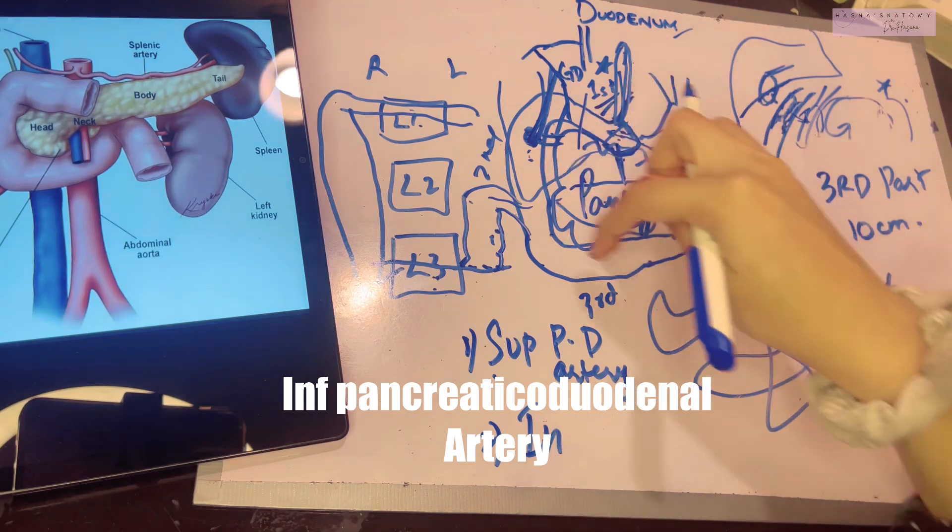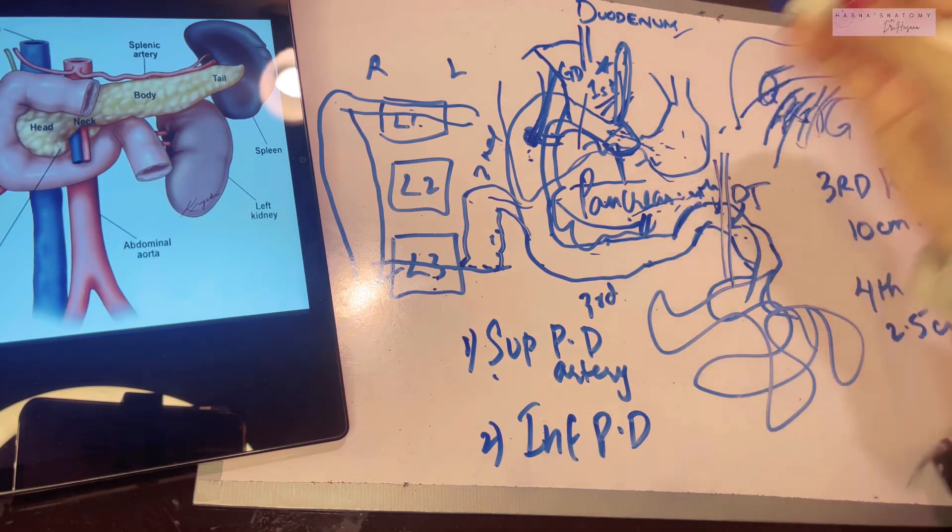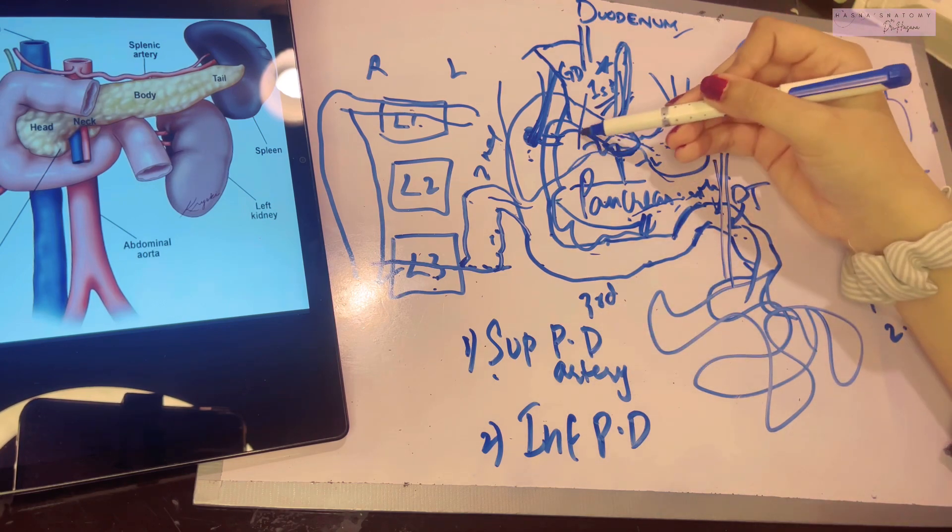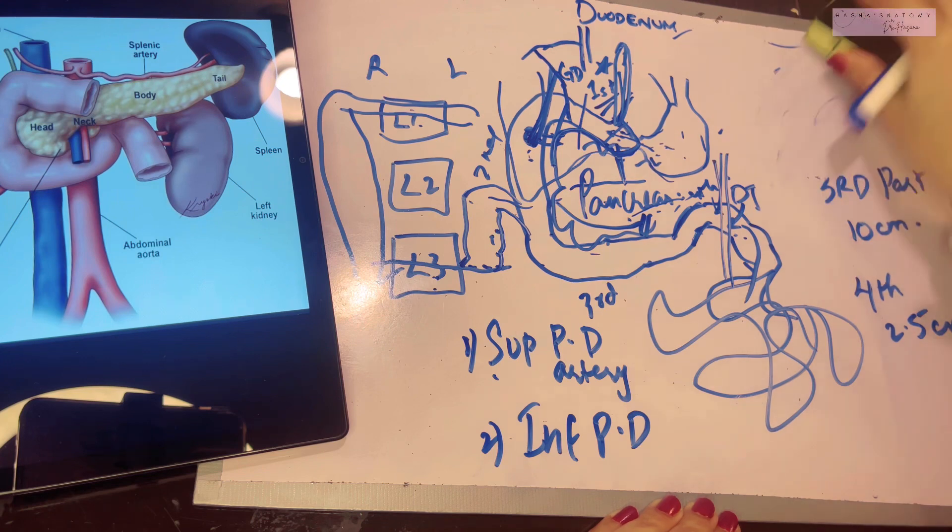And this supplies the rest of the duodenum, along with the pancreas, obviously, head of the pancreas. So these two arteries lie within the C shape, within the curve of the duodenum.